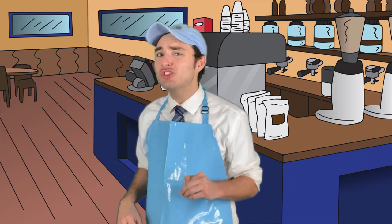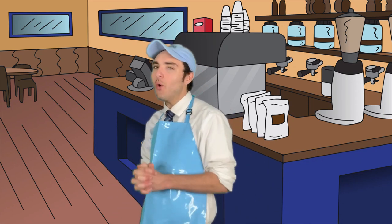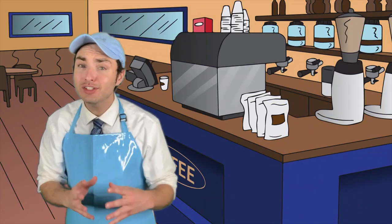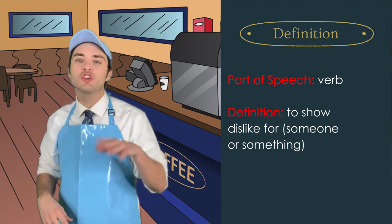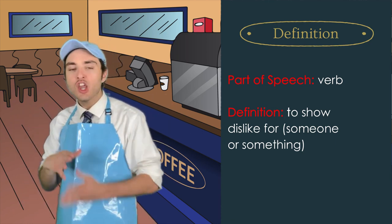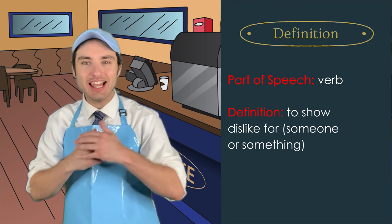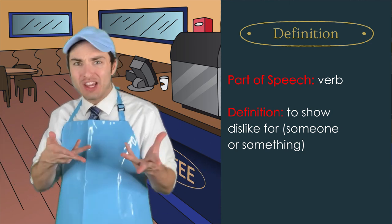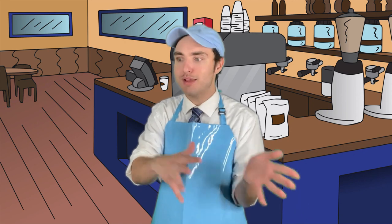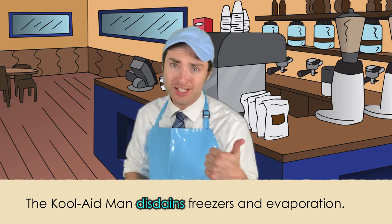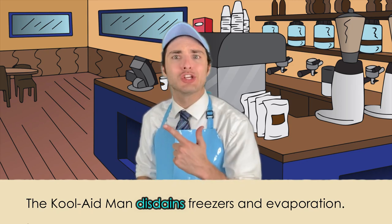But hold up, grammar goodies — disdain isn't just a noun, it's also a verb! As defined, disdain is a verb that means to show dislike for something. You're actively disliking something, openly showing that you're like, no, don't like that. Here it is used as a verb in a sentence: The Kool-Aid Man disdains freezers and evaporation.